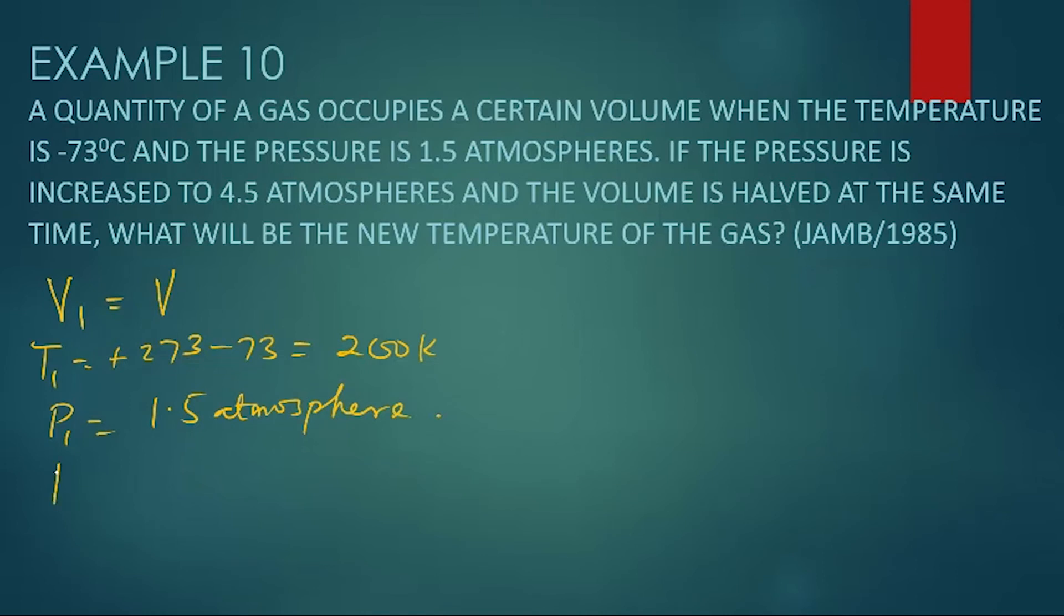If the pressure is increased to 4.5 atmospheres, P2 gives you 4.5 atmospheres. And the volume is halved at the same time. So V2 will give you V over 2, or that's V1 over 2, which is V over 2, because V1 is V.